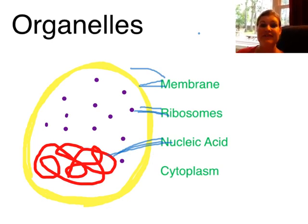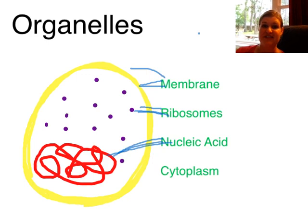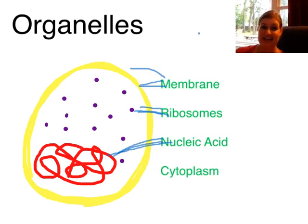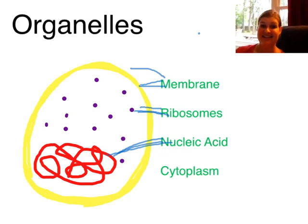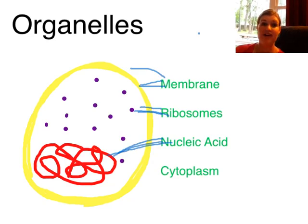Last, we have the cytoplasm. The cytoplasm fills in all of the empty space in the cell — it's kind of a jello or jelly-like substance made mostly of water. So when you say your body is made up of mostly water, it's because every single cell in your body contains cytoplasm, which is essentially water.